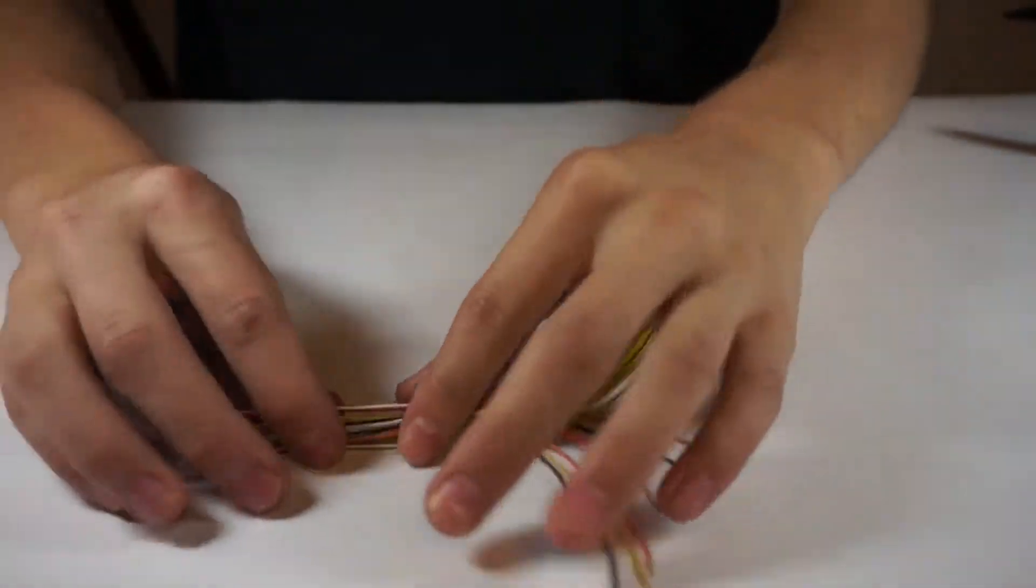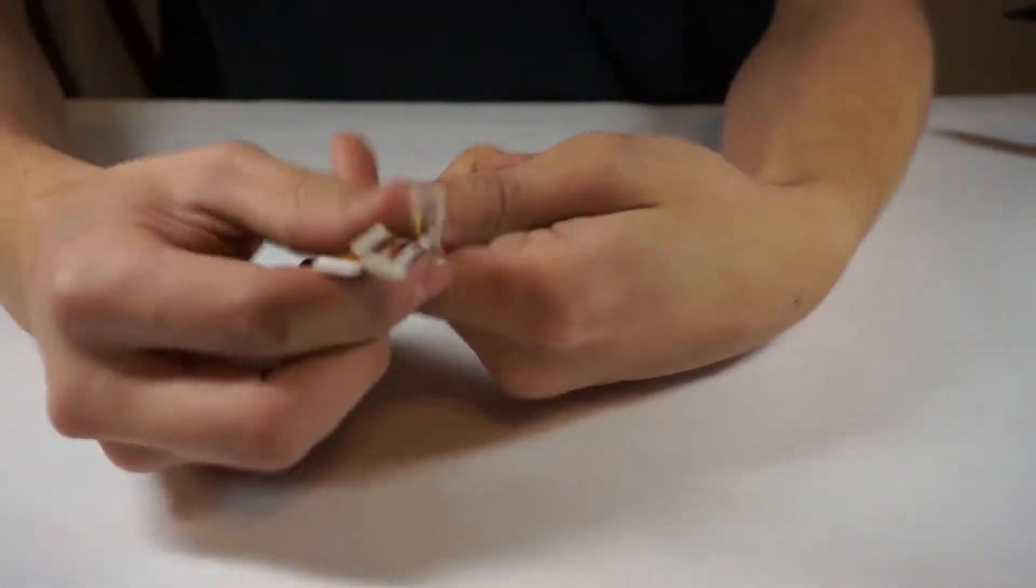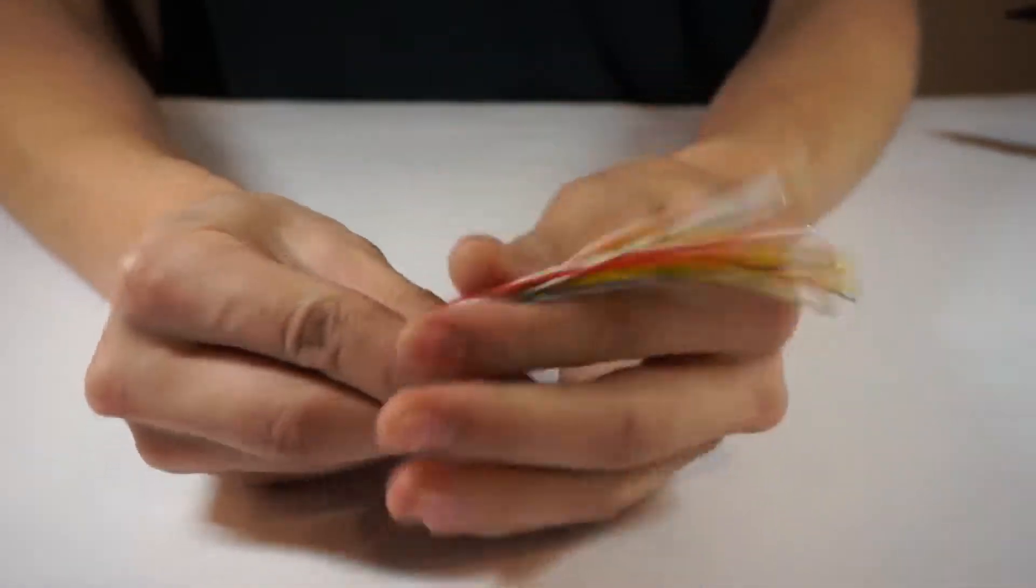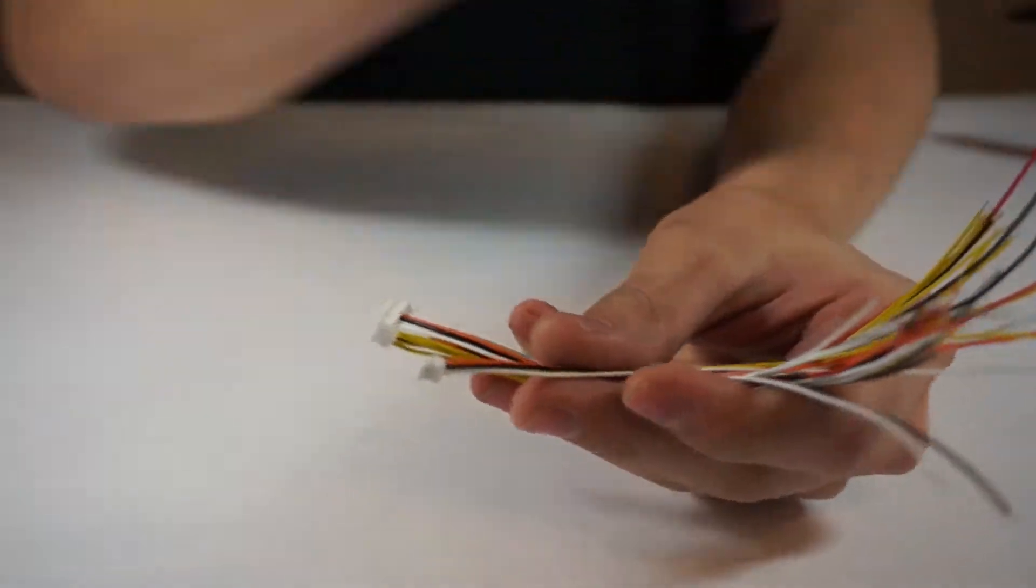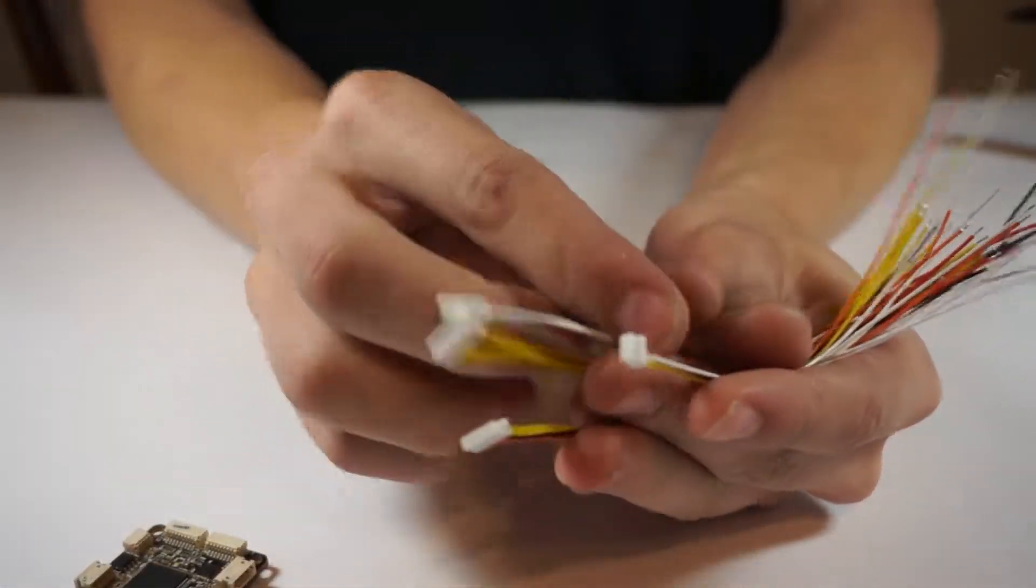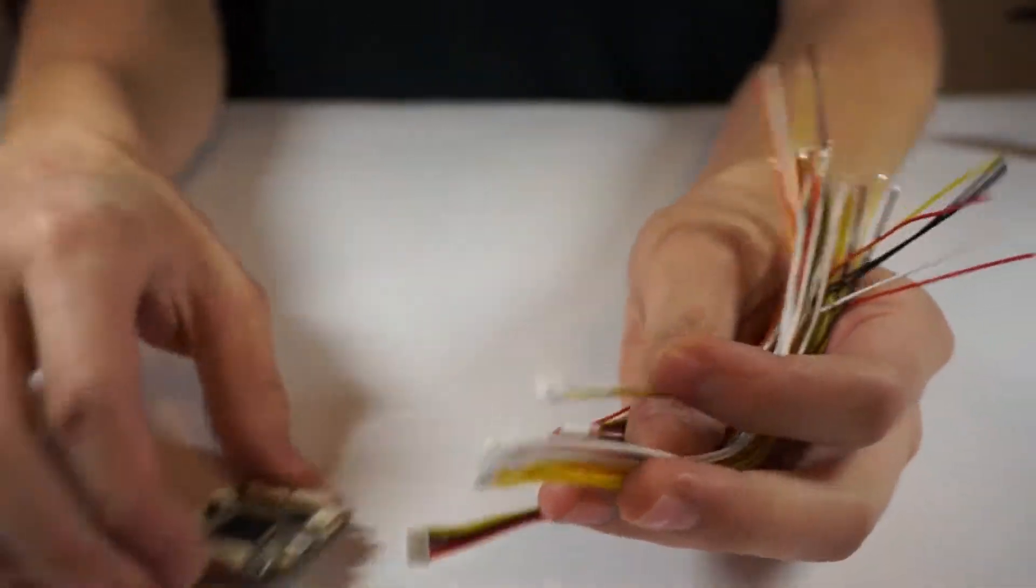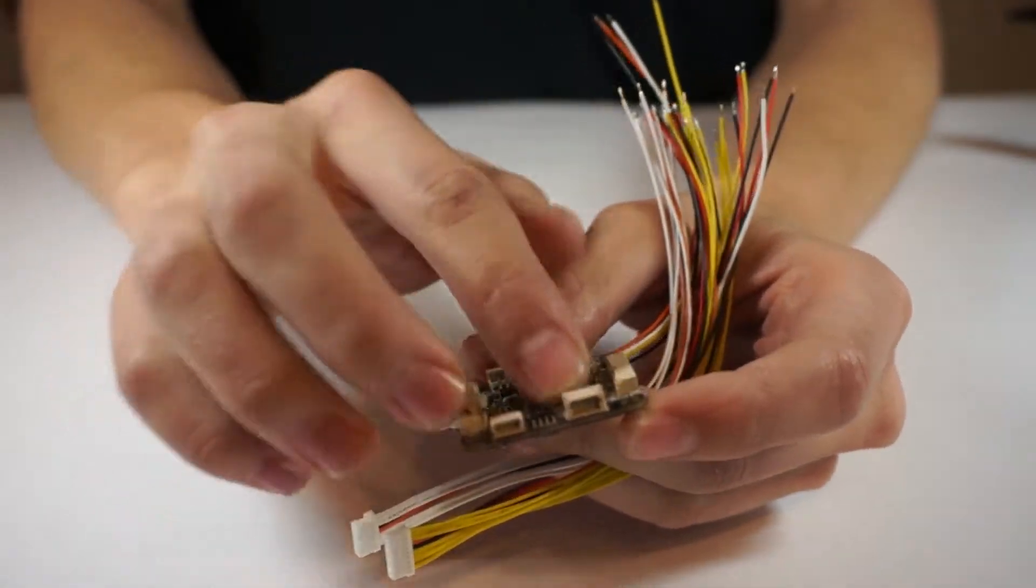So I want to show you what's included as far as cables. When you buy the Vector you're going to get pretty much all the cables that plug into the side of the Vector. All these cables here go into every plug except the satellite port plug, which I'll get into later.